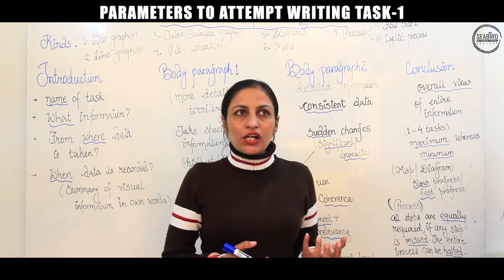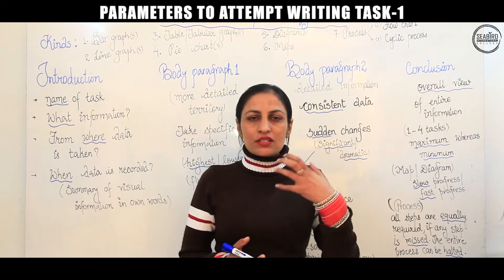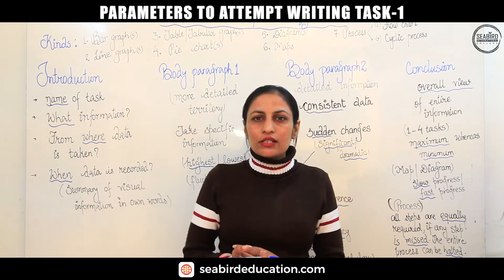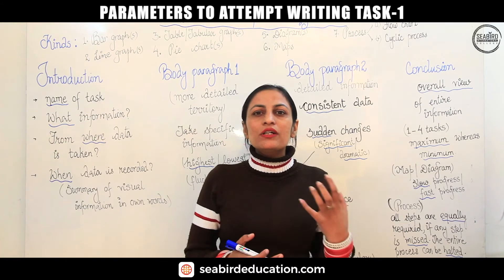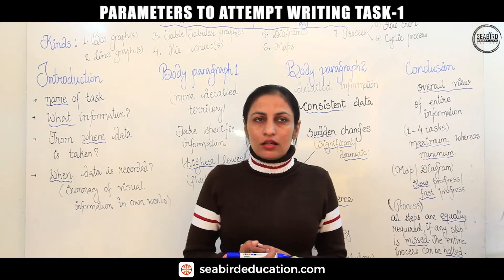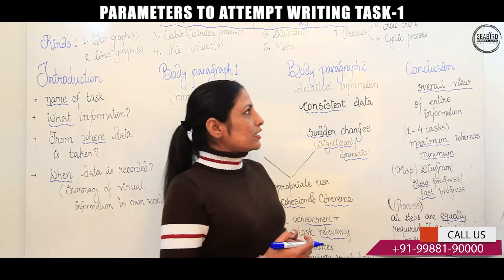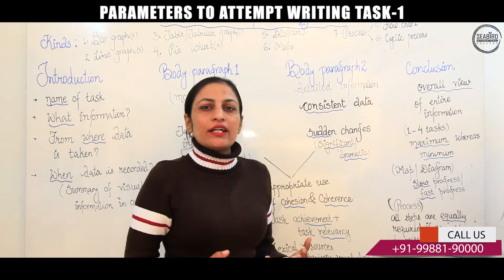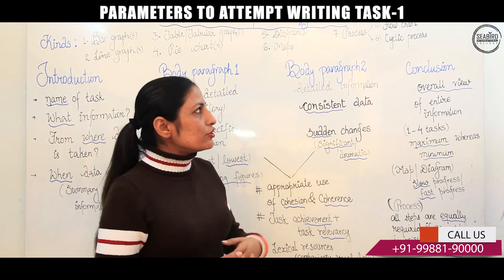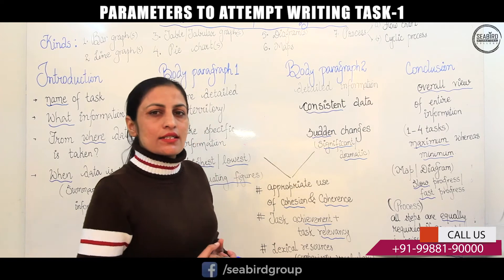In a flow chart, it will be clear that if a process starts with a point and ends with a point, then it will be considered a flow chart. Second will be a cyclic process — a cyclic process which never ends. Make sure that you have to explain it as it is.